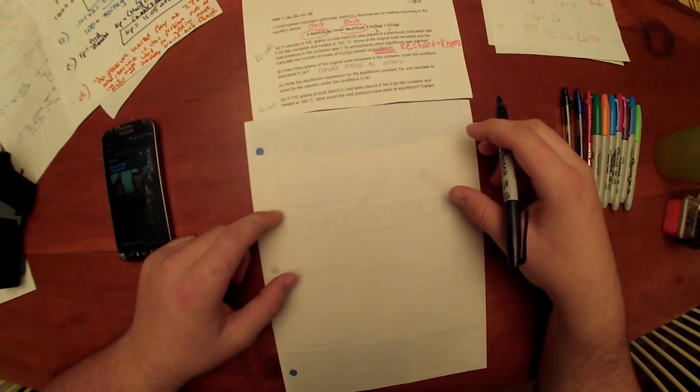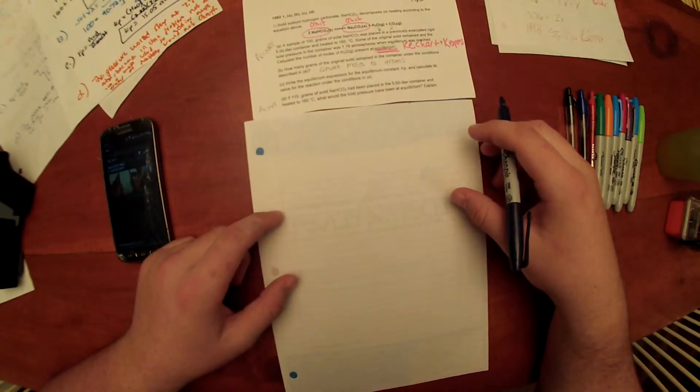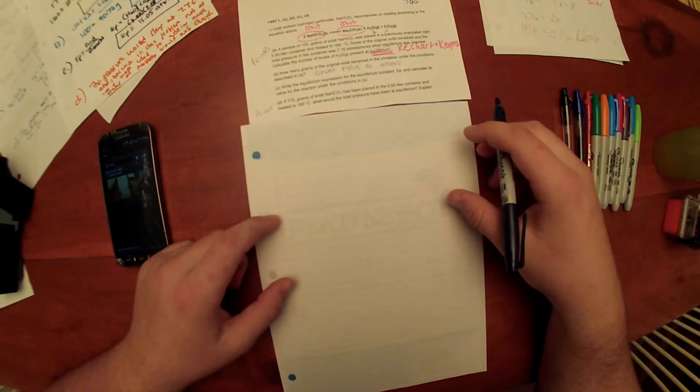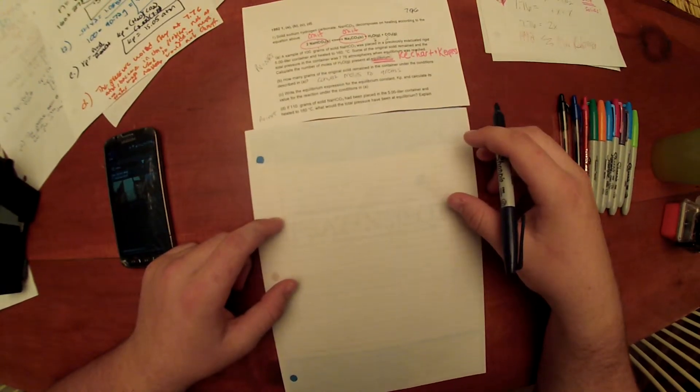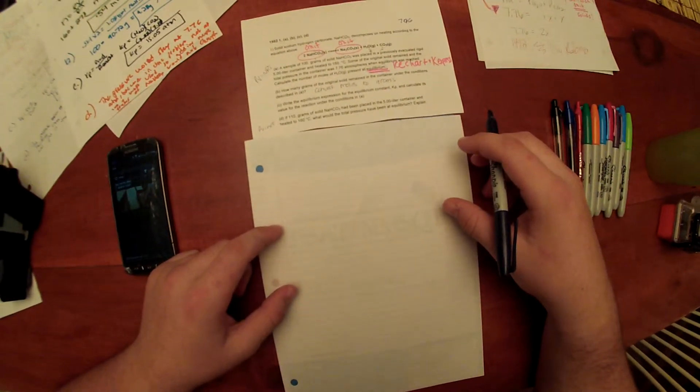Some of the original solid remained and the total pressure in the container was 7.76 atmospheres. When equilibrium was reached, calculate the number of moles of H2O gas present at equilibrium.